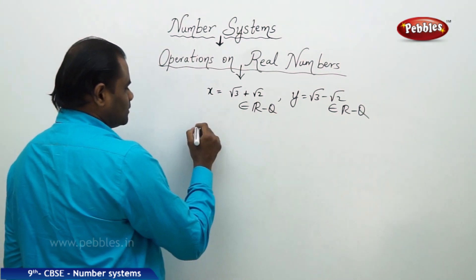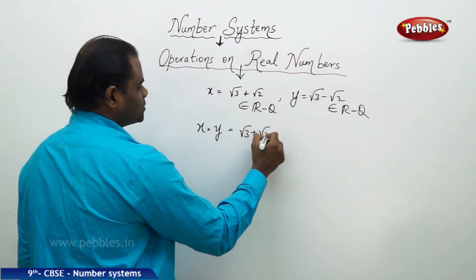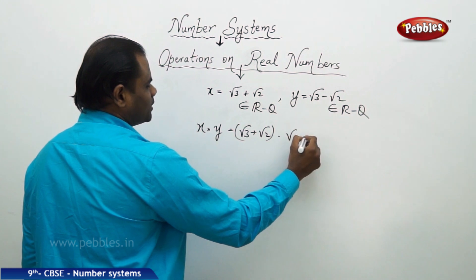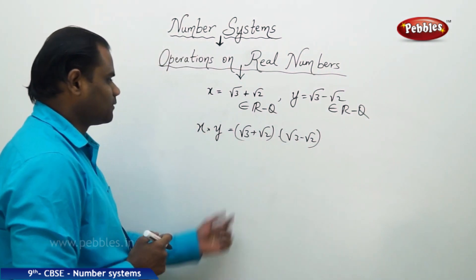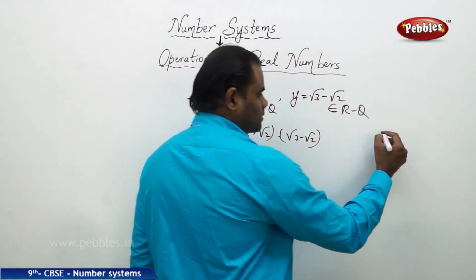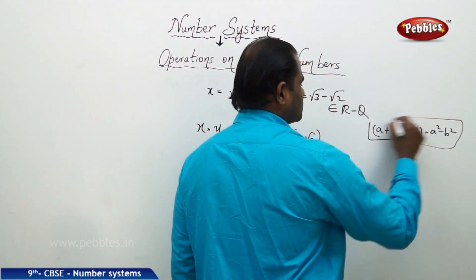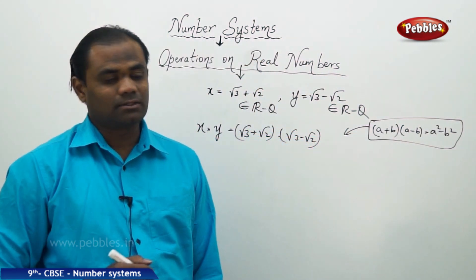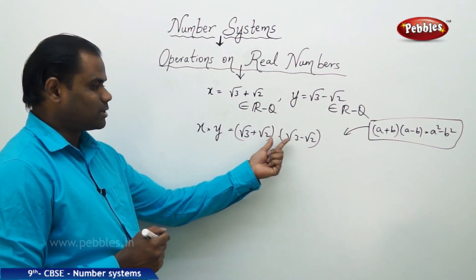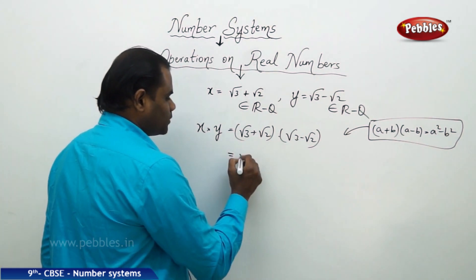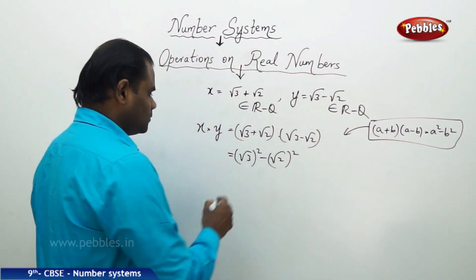When I multiply the two irrational numbers x times y, I substitute x = √3 + √2 and y = √3 − √2 into the product. I identify that this is in the form (a + b)(a − b), which equals a² − b², as learned in earlier classes. So (√3 + √2)(√3 − √2) = (√3)² − (√2)².